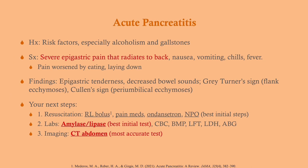Patients with acute pancreatitis typically have a history with some risk factors. Alcoholism and gallstones are the typical causes — they may have just recently gone on an alcohol binge, or they may have gallstone risk factors (the four Fs: fat, female, fertile, and 40). The big symptom you need to be familiar with is severe epigastric pain that radiates straight through to the back. You need to know this.